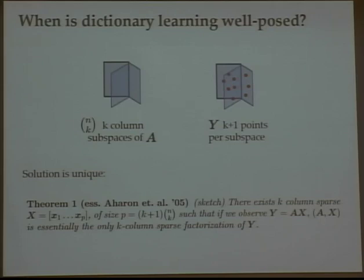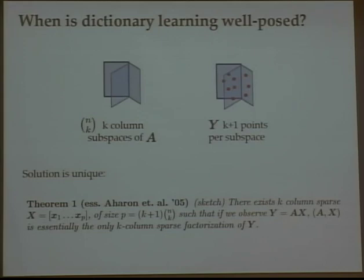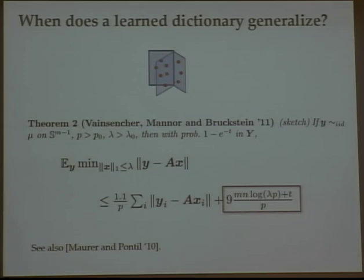There are ambiguities and an interesting geometry to the problem. Each data vector lives on a particular union of k-dimensional subspaces — if each X_j is k-sparse, the data should lie on the set spanned by all n-choose-k subsets of k columns of A. A result due to Mickey Aladd and collaborators says that if you put at least k+1 non-degenerate points on each of these subspaces, you've identified the factorization up to the inevitable ambiguity. However, this is problematic for reasonable data sizes since this p is combinatorially large — this is k+1 times n-choose-k.